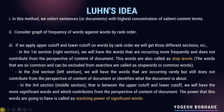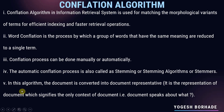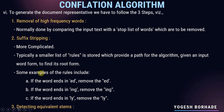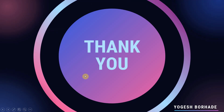In this video we covered Loon's idea, including the graph, stop words, lower and upper cutoffs, significant words, and the resolving power of significant words. We also covered the conflation algorithm, including manual and automatic types, what the automatic conflation algorithm is called (stemming), the steps to generate a document representative, examples of the conflation algorithm, and the steps of the conflation algorithm. If you have any doubts, ask in the comments. Please like, share, and subscribe for more upcoming videos. Thanks for watching.